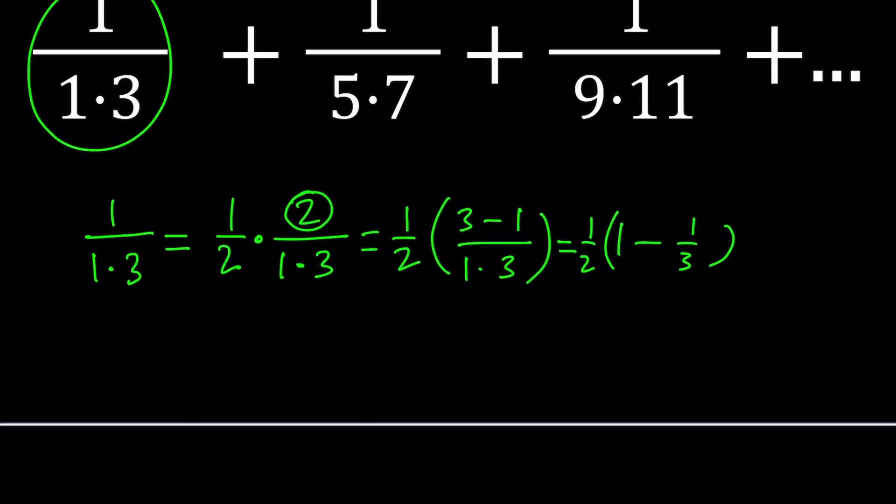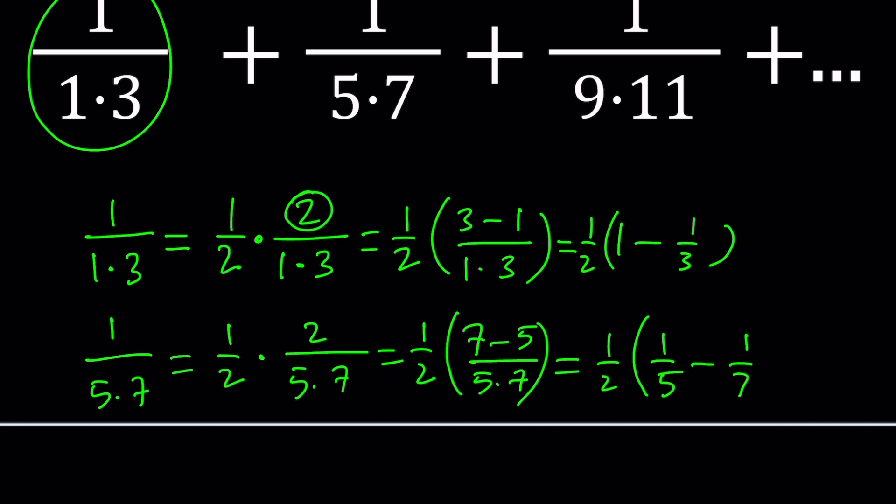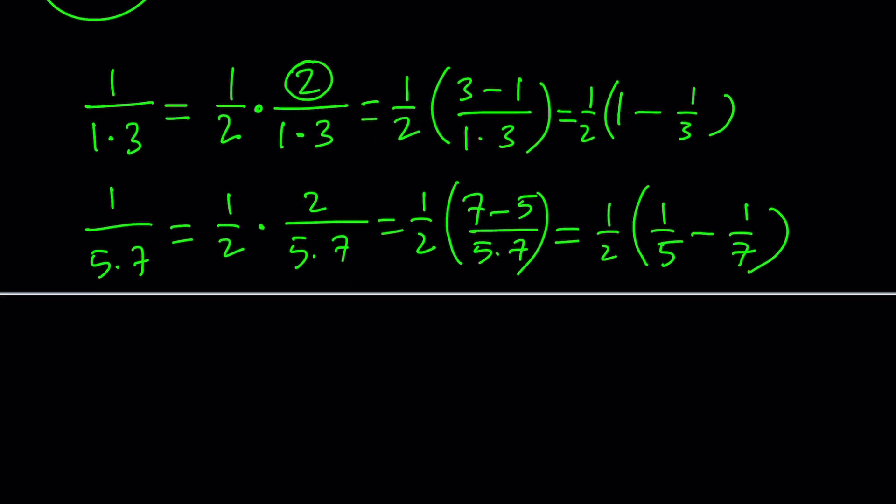Take a look at the second one, 1 over 5 times 7. Again, I can do the same trick: 1 half and 2 over 5 times 7. Then I want to write the 2 as 7 minus 5 this time, because I have 5 and 7 in the denominator. Split it up into 7 over 5 times 7, which is 1 over 5. This is going to be 1 over 5 minus 1 over 7.